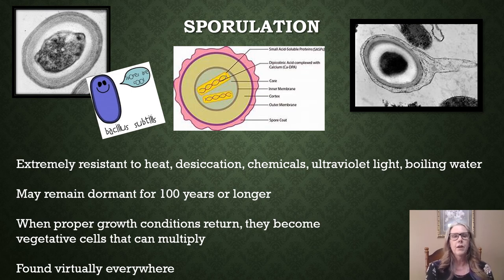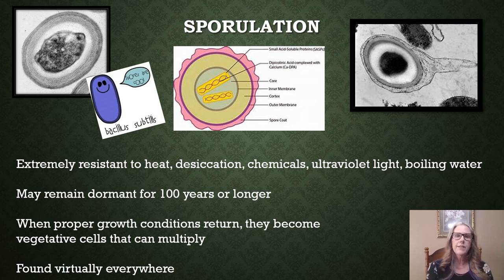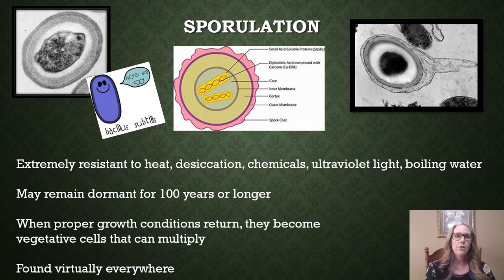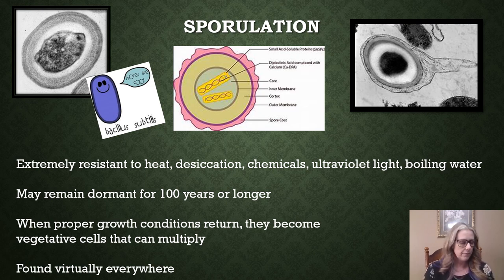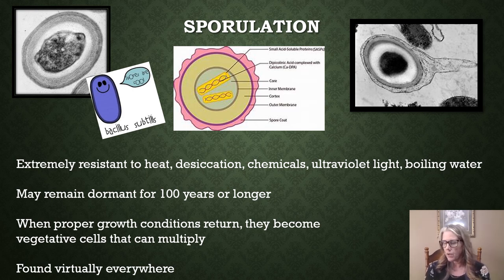It's only when environmental conditions return to favorable that the endospore starts to lose that hard outer shell — it breaks down, and then that cell can become vegetative again. So even if that endospore has been around for 100-plus years, if we give it the right nutrition and water content, it can dissolve the endospore shell, come out of dormancy, and start to replicate again. We find endospores virtually everywhere — in the soil, in your house, lots of different places.